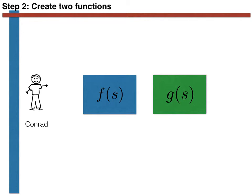In this nomenclature, s will represent the various people that can go into our function: Conrad, Maeve, Michael, Stephen, Carlos, and Dawn. f(s) will represent the function that identifies females, and g(s) will represent the function that recognises those individuals whose names start with M.